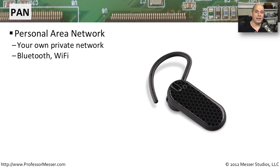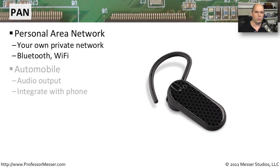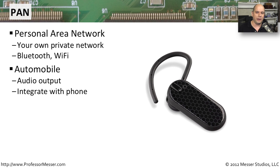The term PAN is a relatively new term in networking. It stands for personal area network. Generally, this is a Bluetooth network with your own devices connecting to it, but it could also be a low-powered 802.11 wireless network as well. We commonly see this in our automobiles — we can connect our mobile devices to our automobile audio system and integrate our dialing services so that we can have complete hands-off, keeping our hands on the wheel and eyes looking forward using that personal area network.